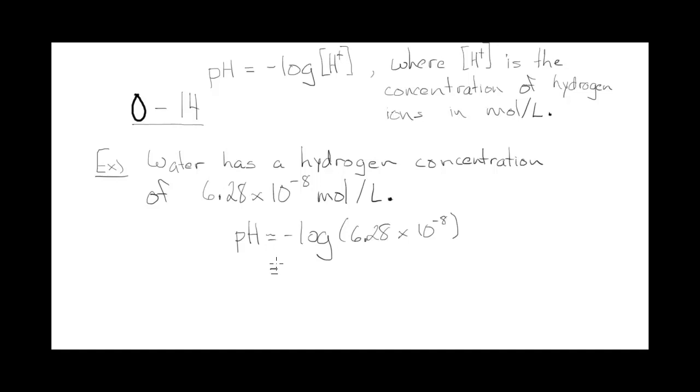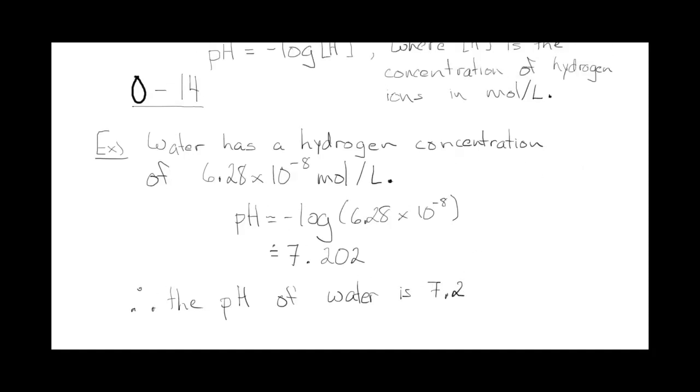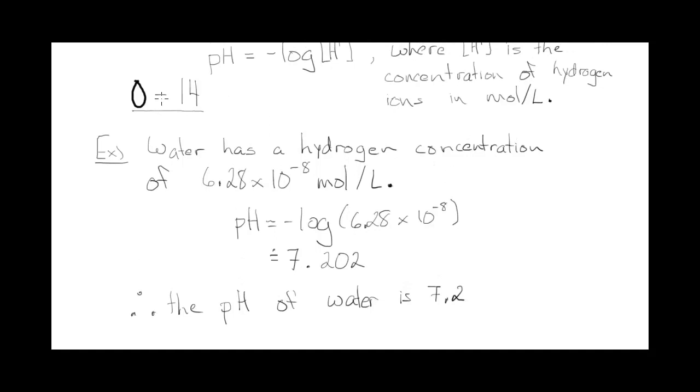When you input that into your calculator you get a value of approximately 7.202. We'll round that off to the nearest tenth and say therefore the pH of water is 7.2. So 7.2 falls right in the middle of that scale which is between 0 and 14, so it's neither acidic or alkaline or what we sometimes call basic.